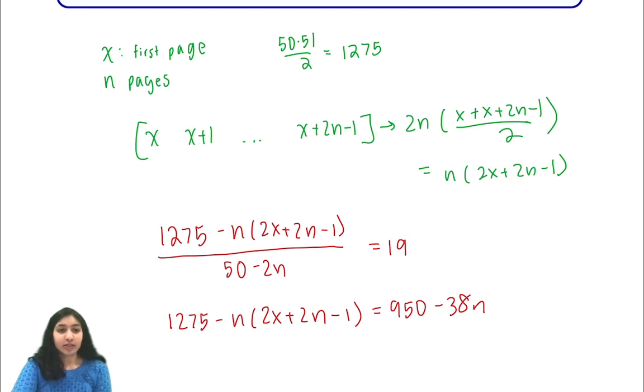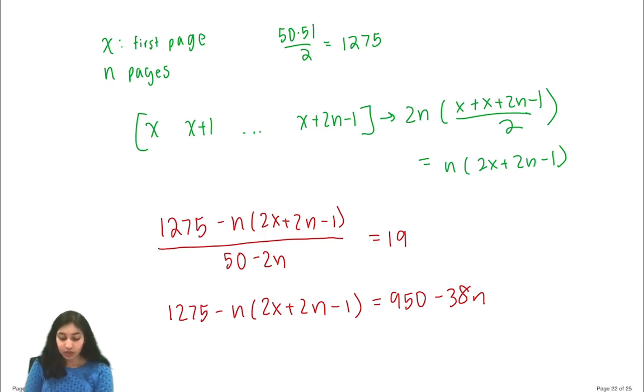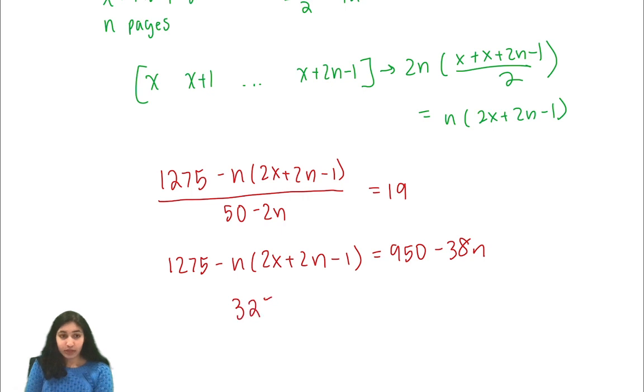At this point, we want to simplify more. We can start off by rearranging terms and moving them, and we'll see that we get 325 is equal to n times 2x plus 2n minus 39.